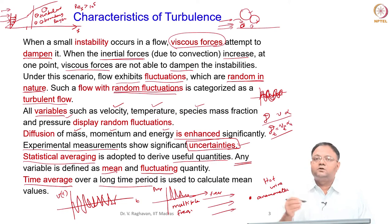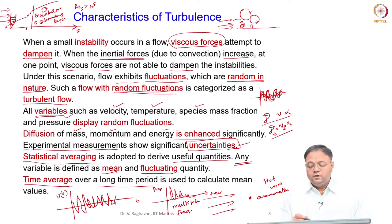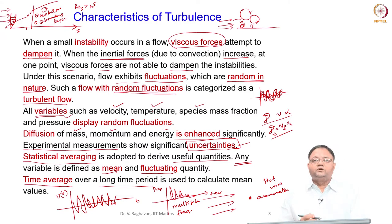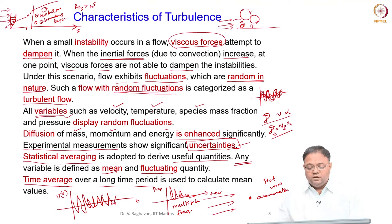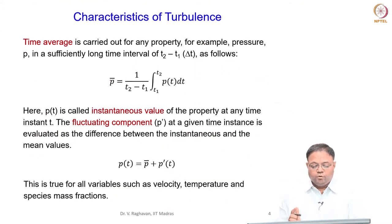If there are oscillations of multiple frequencies, every variable — velocity, temperature, species mass fraction, pressure, and even reaction rate — will undergo such random fluctuations in several conditions.